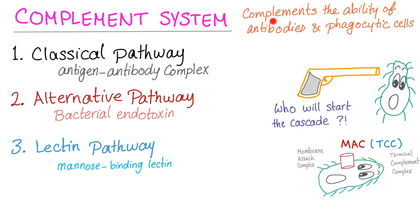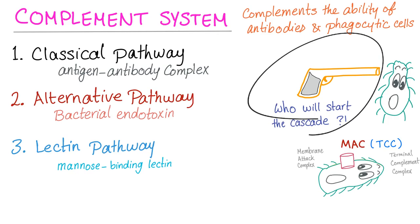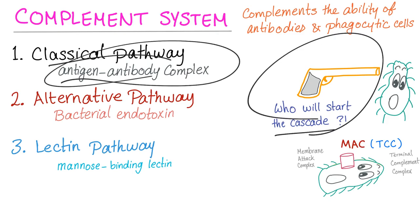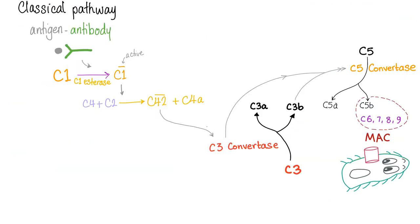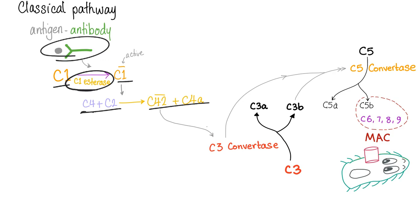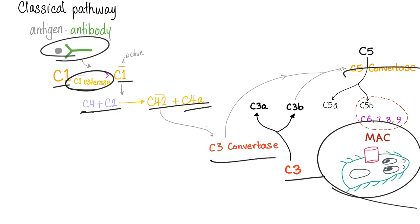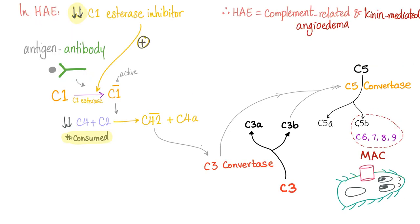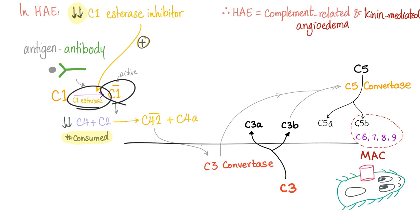We call it complement because it complements the antibody's action. We have three pathways: classical, alternative, and lectin. The only difference is who pulls the trigger — who starts the cascade. In the classical pathway, it's the antigen-antibody complex: antigen-antibody complex activates C1 via C1-esterase, then C4 and C2 form C4b2a and C4a, then C3 convertase, C5 convertase, and the MAC, which attacks. In hereditary angioedema, there is no C1-esterase inhibitor, so C1-esterase is left uninhibited to activate the complement.